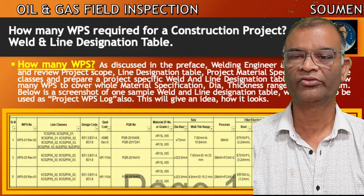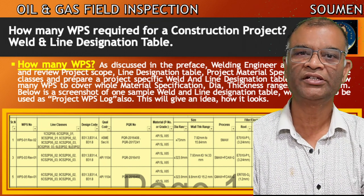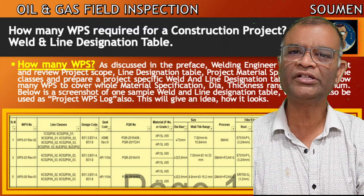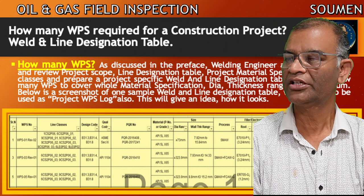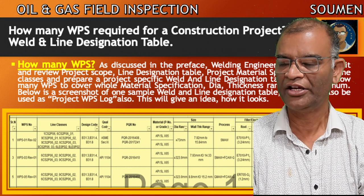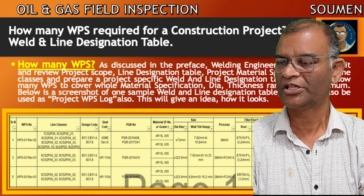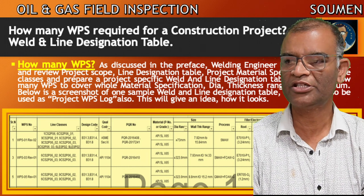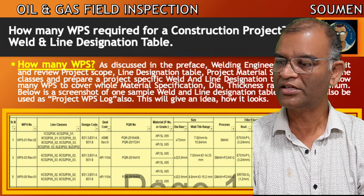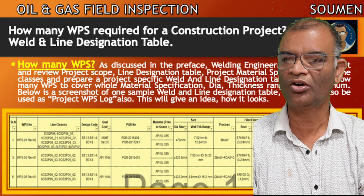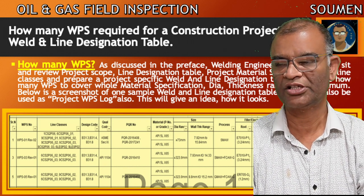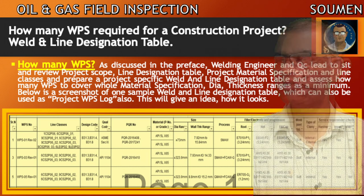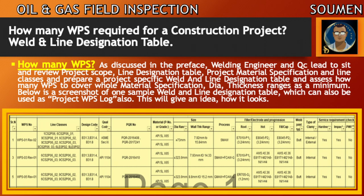Now, another question: for one project, is one WPS enough or will we need multiple WPSs? Who decides and how? The welding engineer and QC lead sit together and review the project scope, line designation table, project material specification and line classes, and prepare a project-specific weld and line designation table. They then assess how many welding procedures are required to cover the whole project material specification, diameter, and thickness ranges to be welded. Below is a screenshot of a sample weld and line designation table.